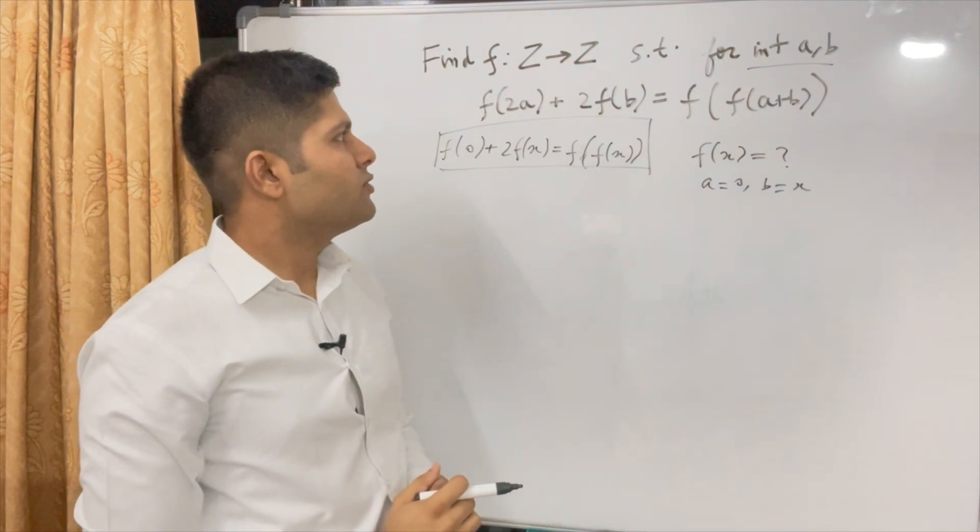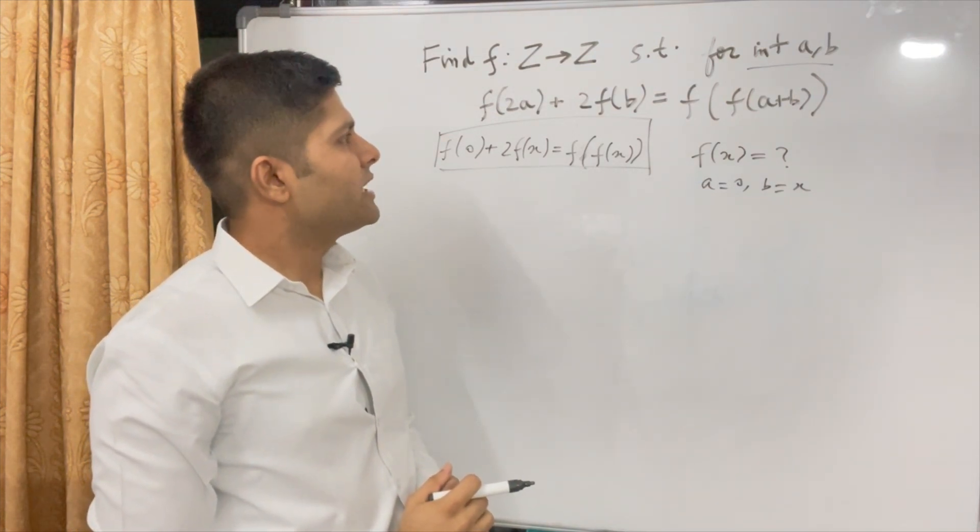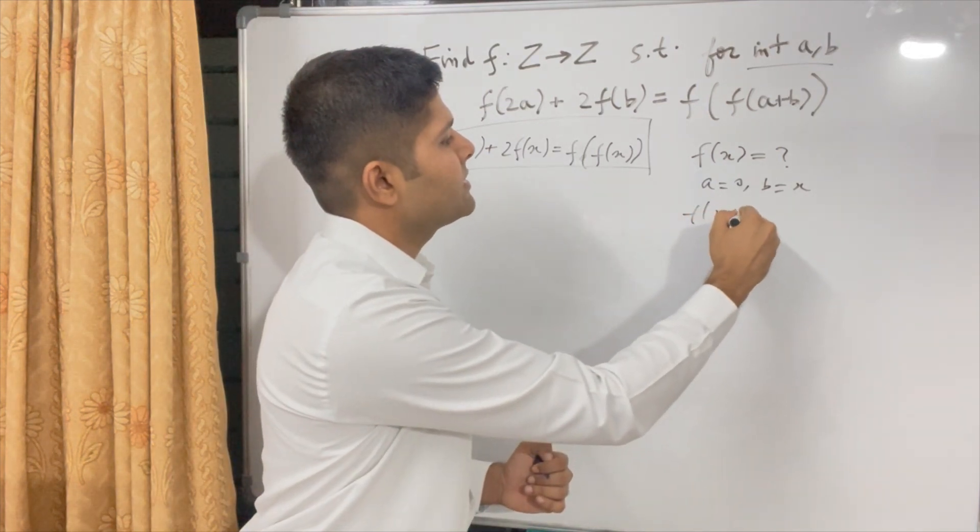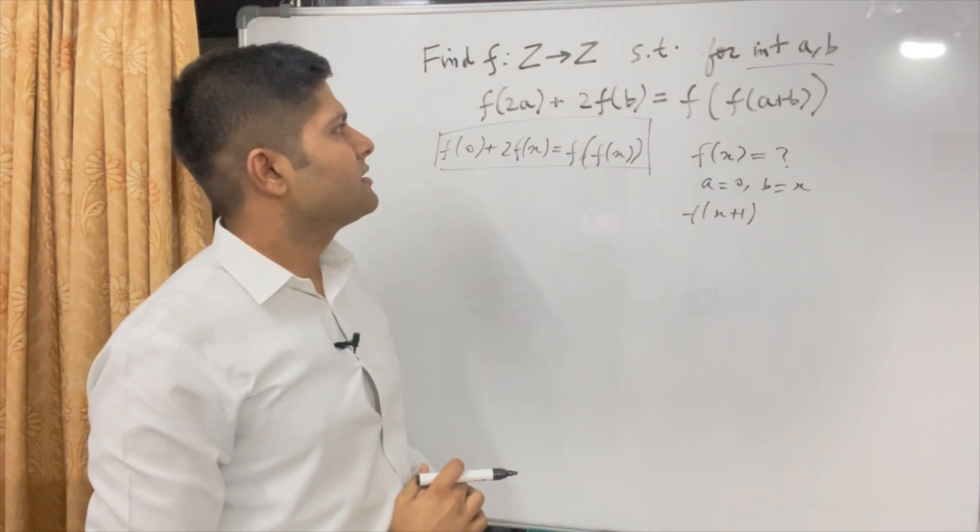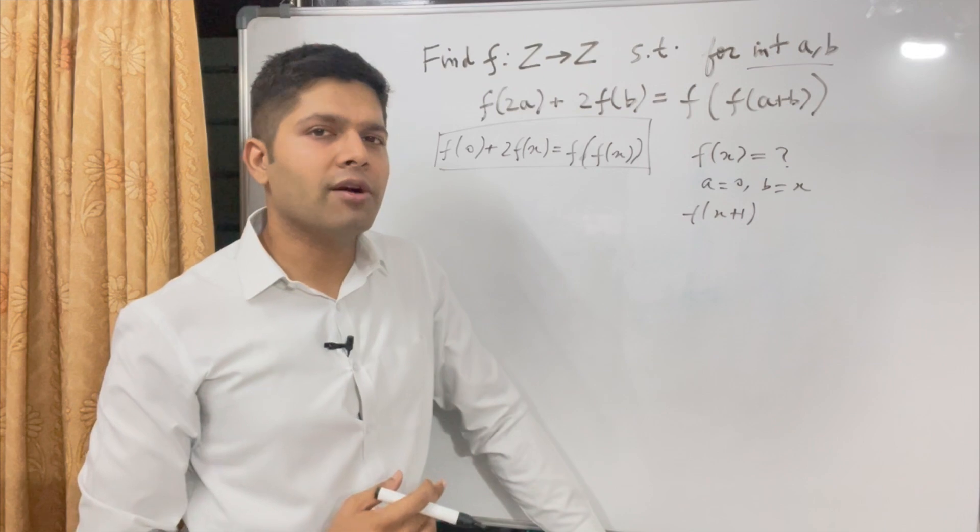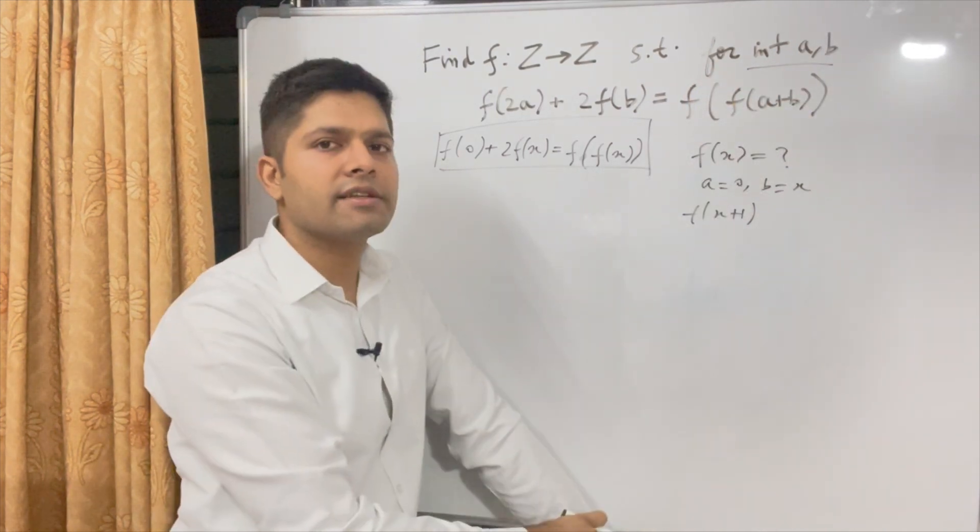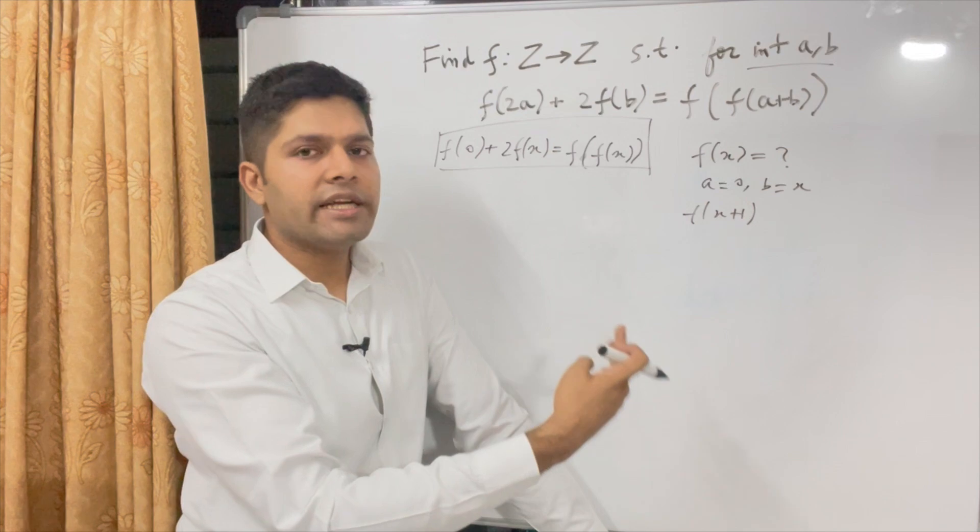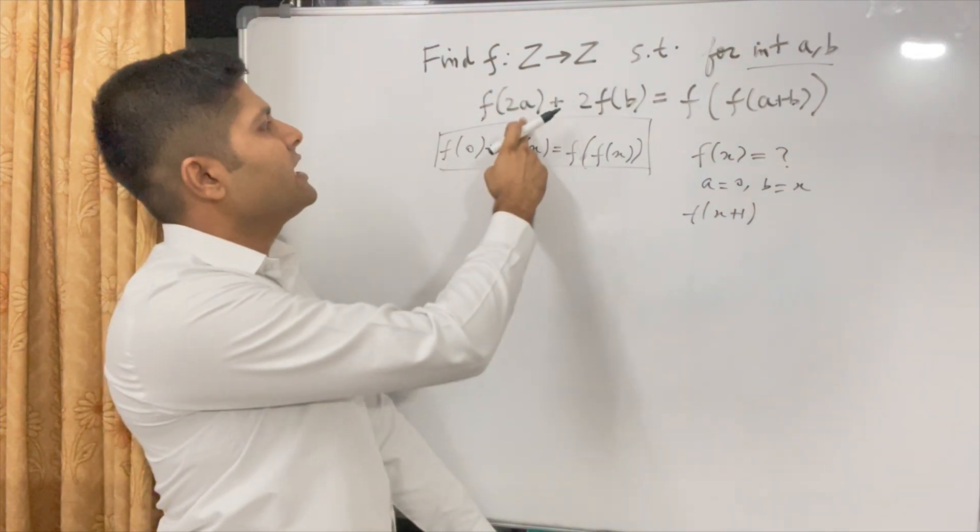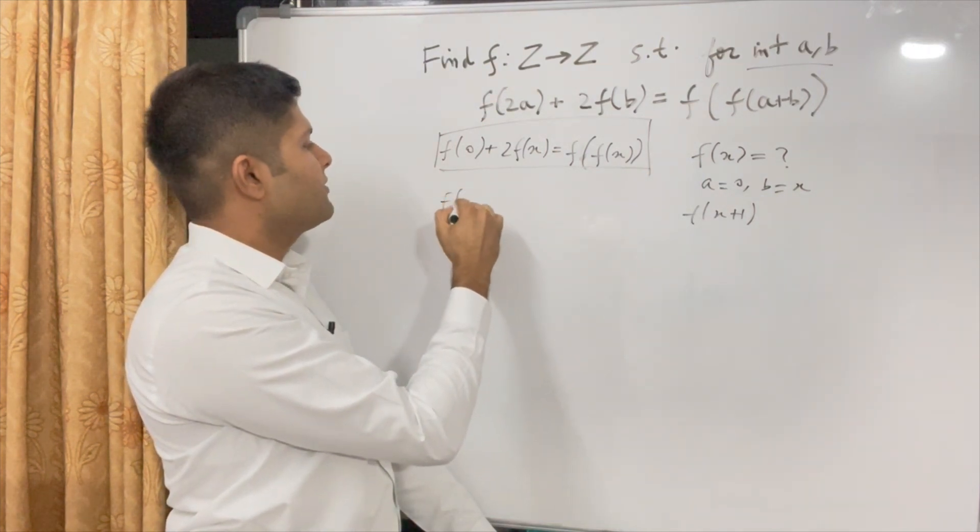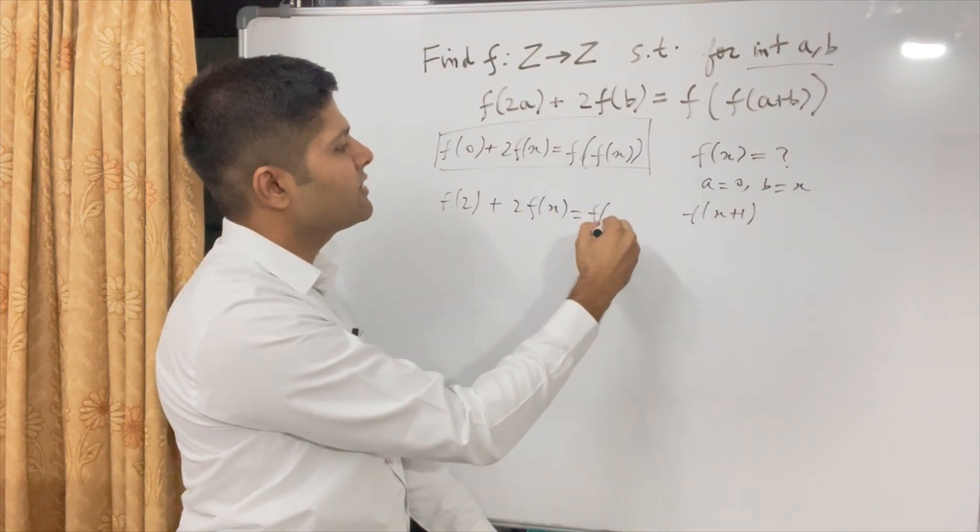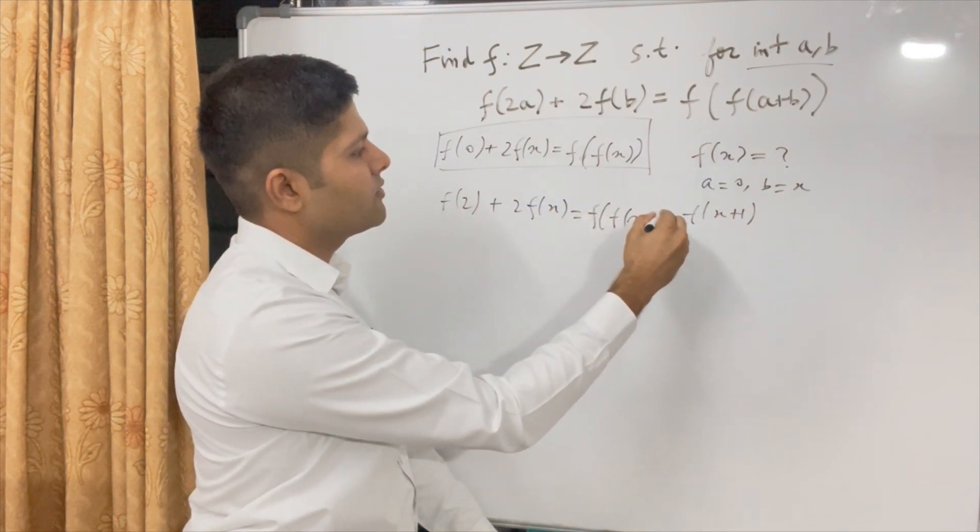So now what more can we do? One thing that comes to my mind is to find out f(x+1). If you put value of a as 1 and b as some other x, then we are finding x+1. So why did we think of x+1? Because this is a function for integers. Why don't we try putting another integer, the next integer. So if we put a equal to 1 and b equal to x, then this is f(2) + 2f(x) = f(f(x+1)).